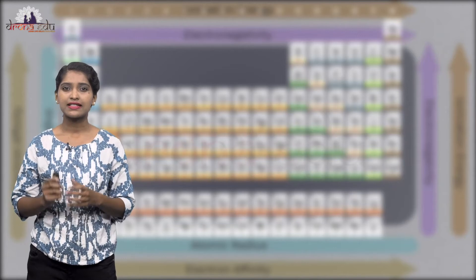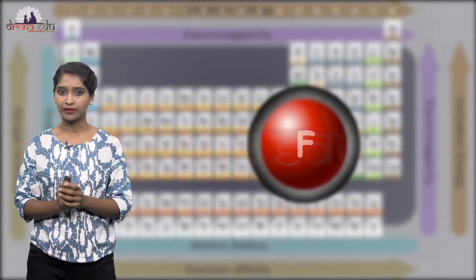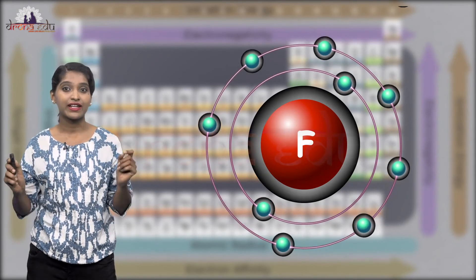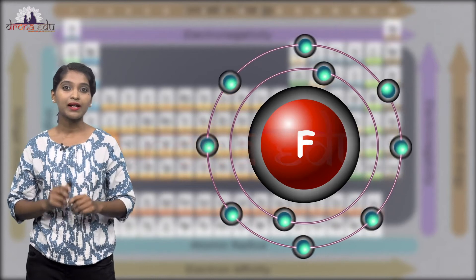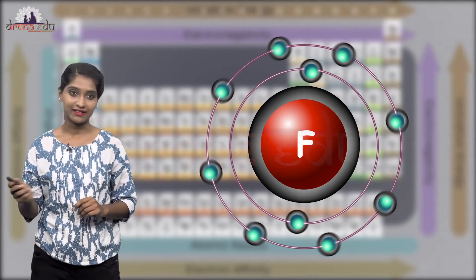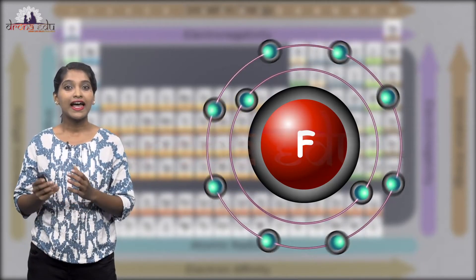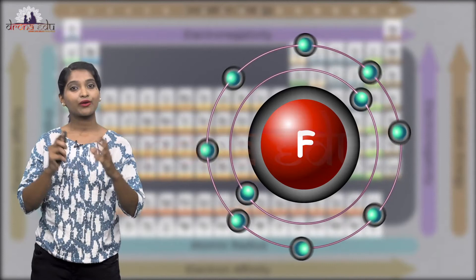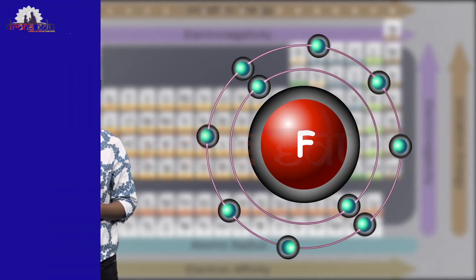Non-metals tend to gain electrons and form bonds, so they are electronegative in nature. In the periodic table, the elements on the right are non-metals. Non-metallic properties or electronegativity increases across the period and decreases down the group.